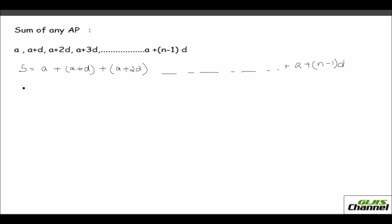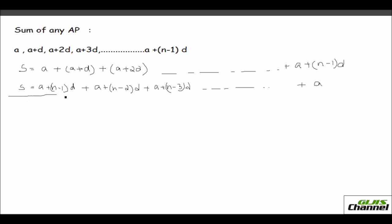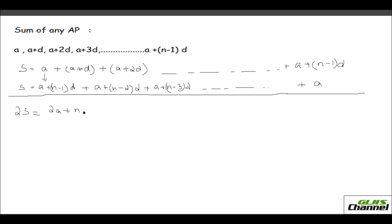I take another S and write the series in reverse: the first term is A plus (n minus 1)D, the second is A plus (n minus 2)D, then A plus (n minus 3)D, and so on, with the last term being A. Adding these two series together, for the first pair I get A plus A plus (n minus 1)D, which I write as 2A plus (n minus 1)D.